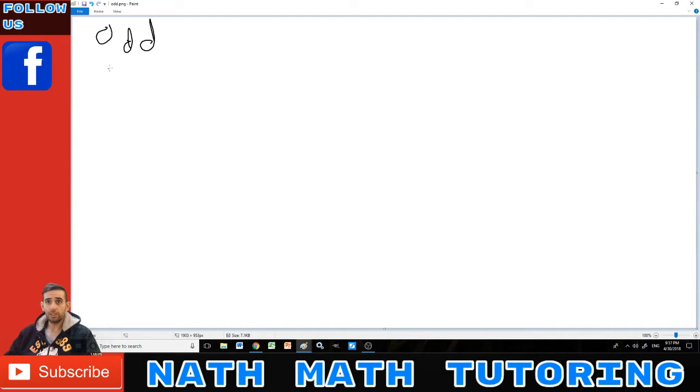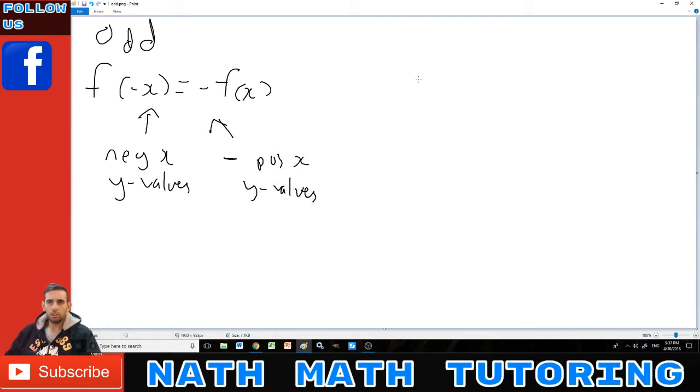The definition of an odd function is f(-x) equals -f(x). So here, that's the negative x, y values. And this here is minus the positive x, y values.